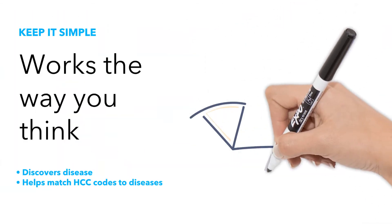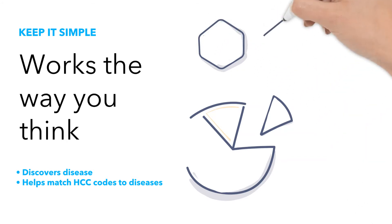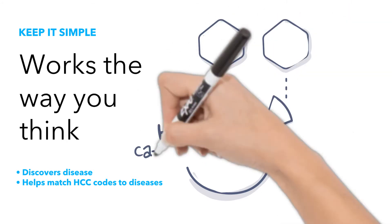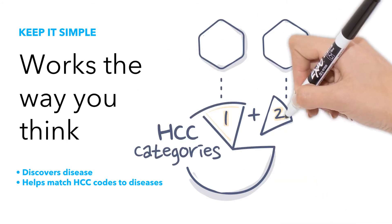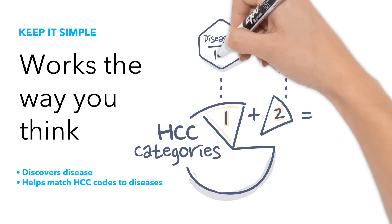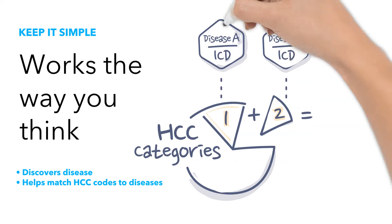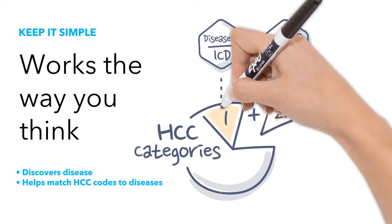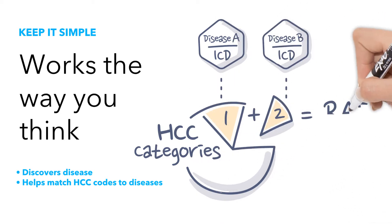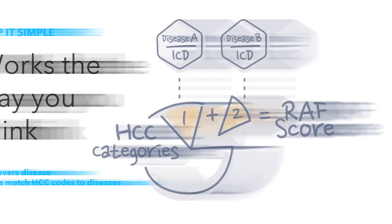We know you think in terms of disease and not codes or risk adjustment categories, so our proprietary disease detection algorithm thinks the same way. Once a disease is detected, the coding and RAP scoring is easy. You get the recommended code for the disease and our HCC coding tool matches it to the risk adjustment category for scoring. Isn't it nice when you can keep things simple?